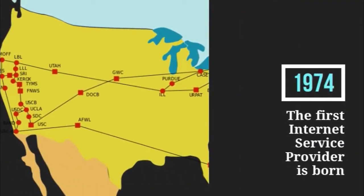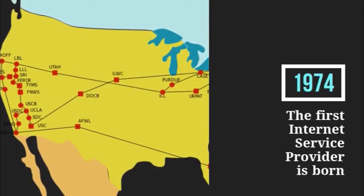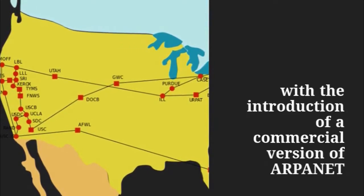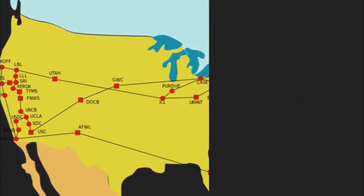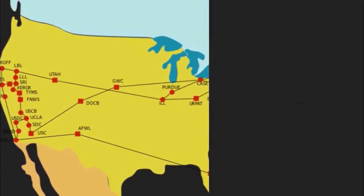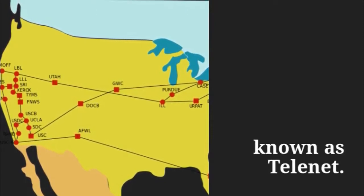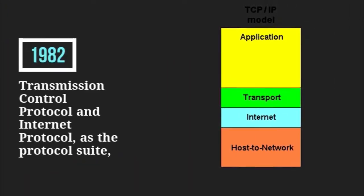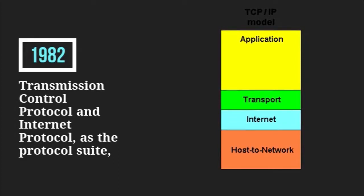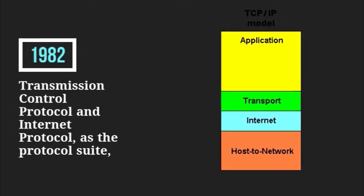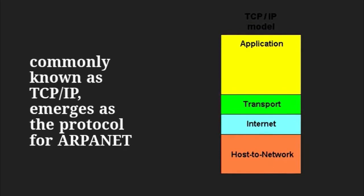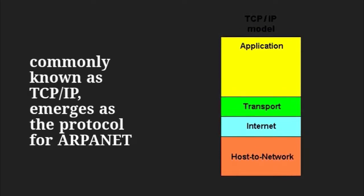In 1974, the first internet service provider is born, with the introduction of a commercial version of ARPANET known as TELNET. In 1982, transmission control protocol and internet protocol, as the protocol suite commonly known as TCP/IP, emerges as the protocol for ARPANET.